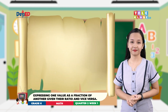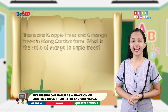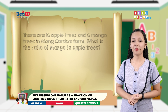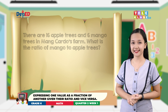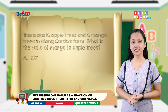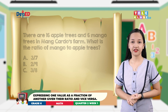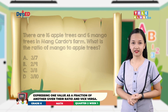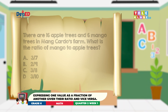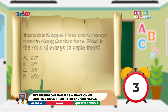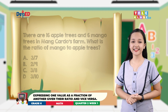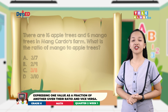Box 3 question: There are 16 apple trees and 6 mango trees in Mount Cardo's farm. What is the ratio of mango to apple trees? A: 3 sevenths. B: 2 ninths. C: 3 eighths. D: 3 tenths. The answer is 6 over 16, or 3 eighths.